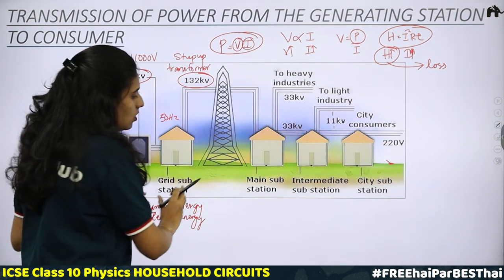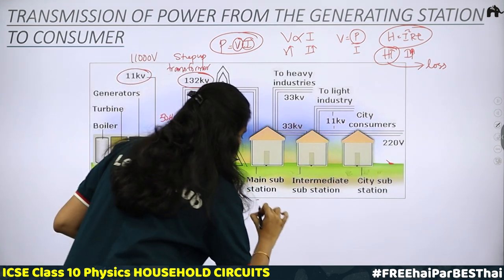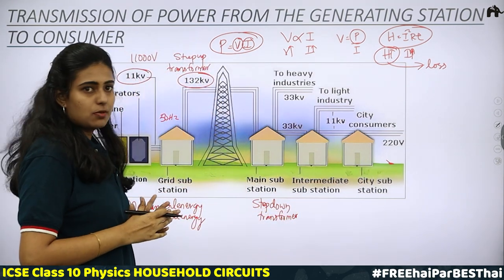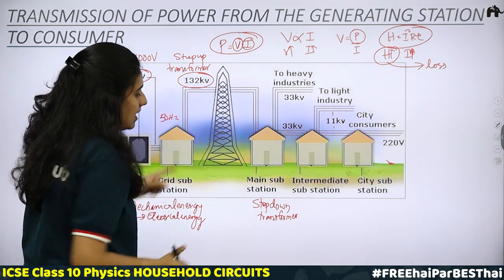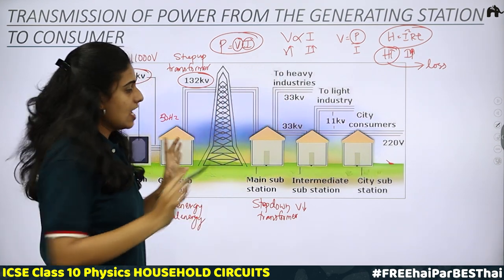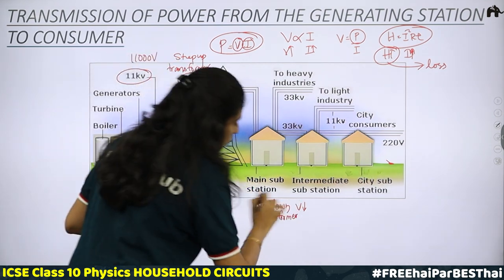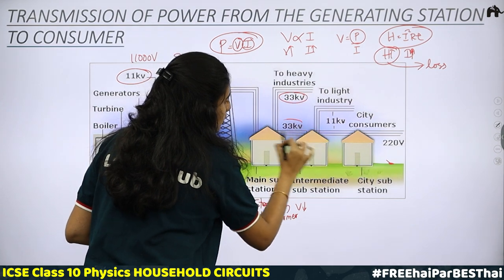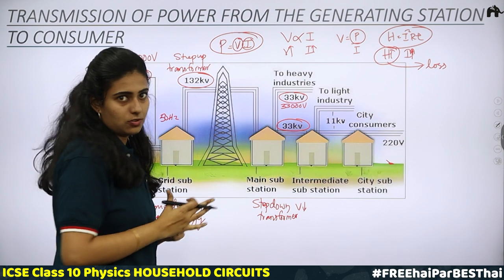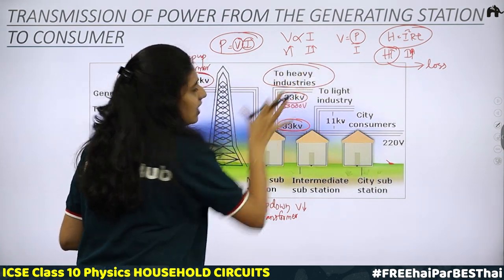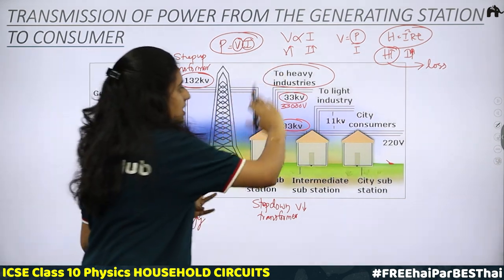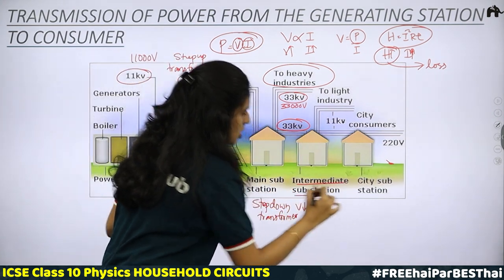From the grid substation, the electricity reaches the main substation, where there is a step-down transformer. The step-down transformer decreases the voltage from 132 kV to 33 kV. This 33 kV goes to heavy industries, which need more voltage and current for heavy appliances to work. The remaining goes to the intermediate substation.